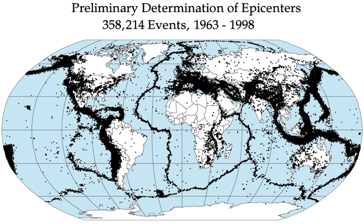The Zipingpu Dam is believed to have fluctuated the pressure of the fault 1,650 feet (503 meters) away, probably increasing the power of the earthquake and accelerating the rate of movement for the fault. The greatest earthquake in Australia's history is also claimed to be induced by humanity through coal mining. The city of Newcastle was built over a large sector of coal mining areas, and the earthquake has been reported to have spawned from a fault reactivated due to millions of tons of rock removed in the mining process.